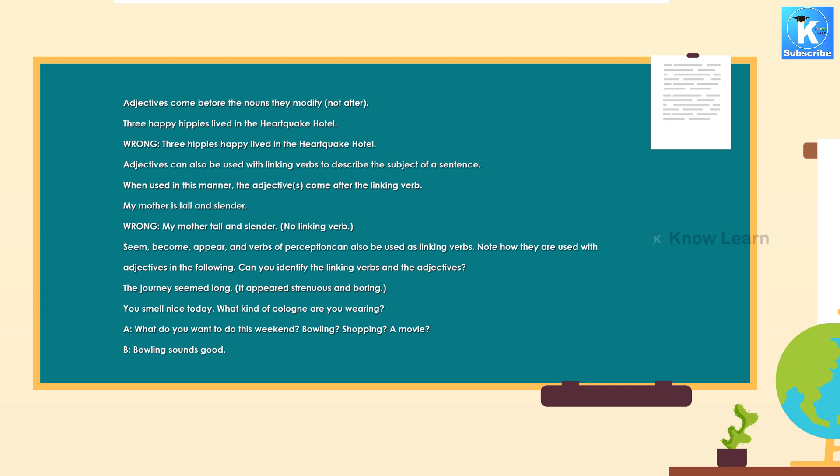Seem, become, appear, and verbs of perception can also be used as linking verbs. Note how they are used with adjectives in the following. Can you identify the linking verbs and the adjectives? The journey seemed long. It appeared strenuous and boring. You smell nice today. What kind of cologne are you wearing?